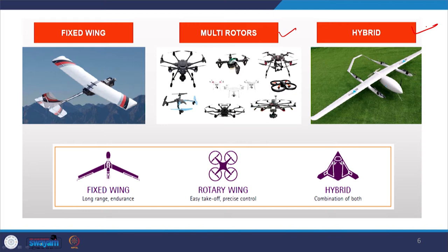Each one has its specific application. Under the multi-rotor system, there are several rotors attached — 4, 6, or 8. Under the three categories of fixed wing, multi-rotor, and hybrid, the fixed wing will have very long range and endurance, while the rotary wing is easy to take off vertically from the ground, and the hybrid system takes advantage of the capabilities of both.